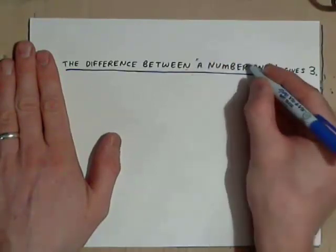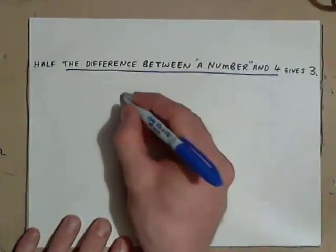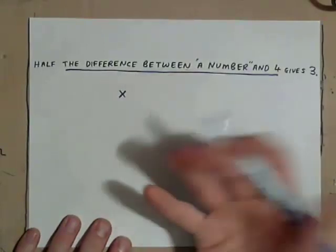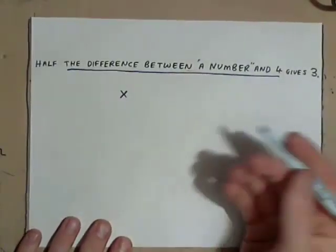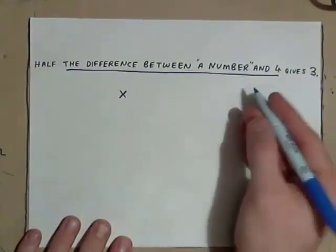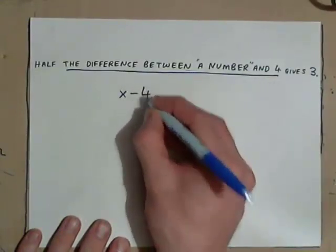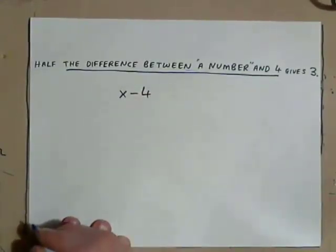The difference between a number and 4, a number we usually represent by a variable, like the letter x. Or, you could use a or n or p or q, anything. But, we usually use x. Difference between a number and 4, x minus 4. Okay?